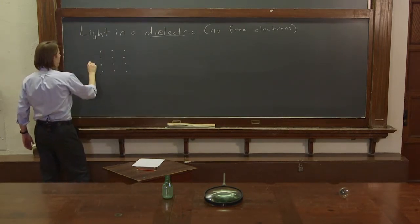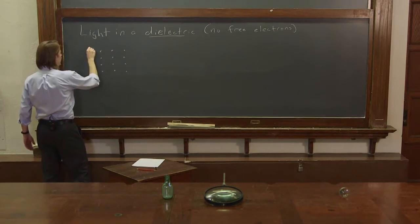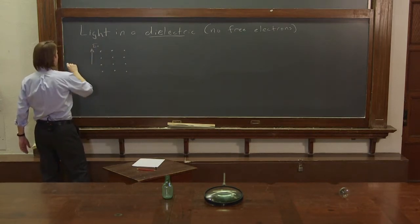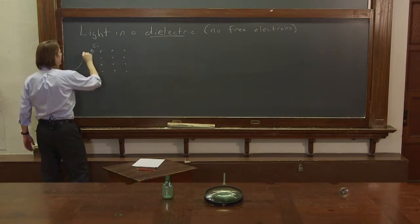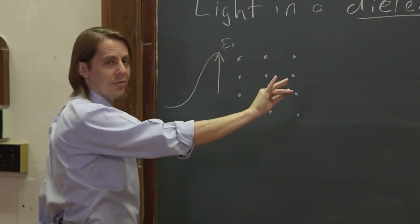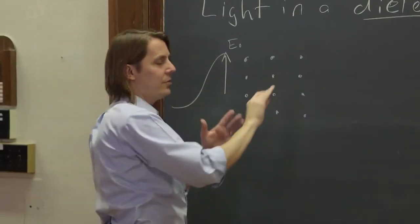And let's think about light. We know is an oscillating electric field. So there's the amplitude of some sinusoidal oscillation of light, basically a plane wave, and it's going to strike this material.